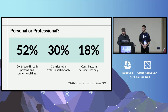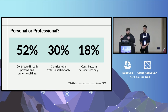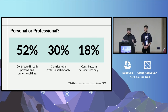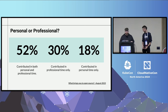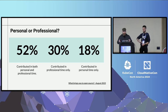Google actually did a study in 2023, polling contributors to see if they're contributing just during business hours for their job, or during off hours for themselves. It turns out that 52% of them are doing both. And if you add in those contributing for their job, that's actually about 80% — a pretty significant amount of people doing something for their job.